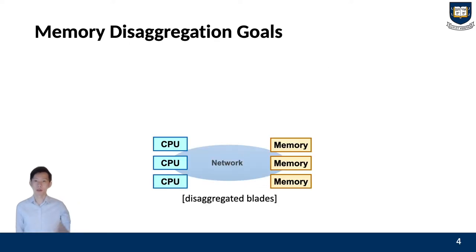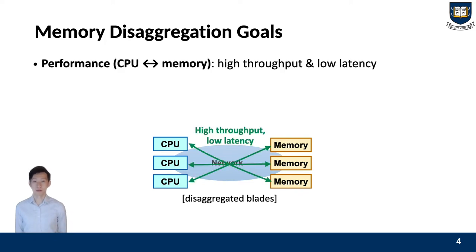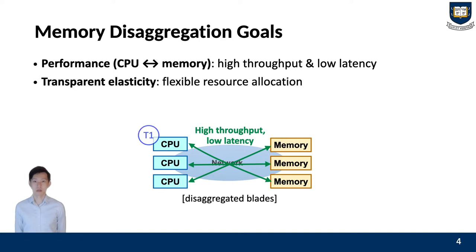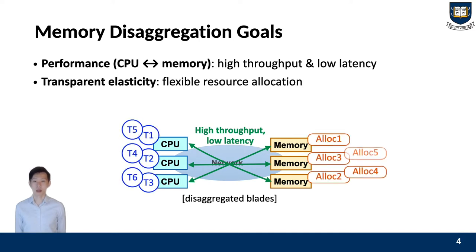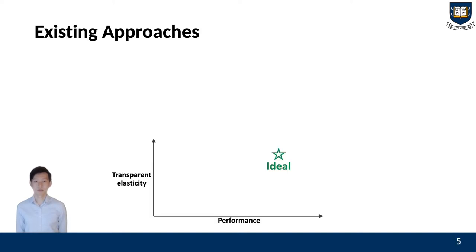In memory disaggregation, we want to achieve performance and transparent elasticity at the same time. Performance represents high throughput and low latency for data fetch over the network so that the CPU can quickly get the data it wants to access. Transparent elasticity represents flexible resource allocation — applications running on disaggregation can use any compute and memory resources wherever they are available. Our goal is to create a system that achieves both simultaneously. However, in previous studies, only one of the two metrics could be achieved.